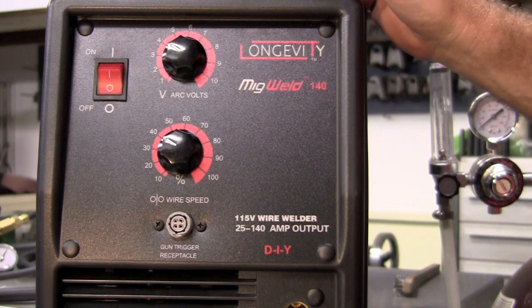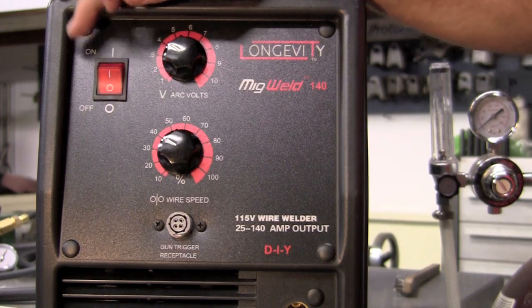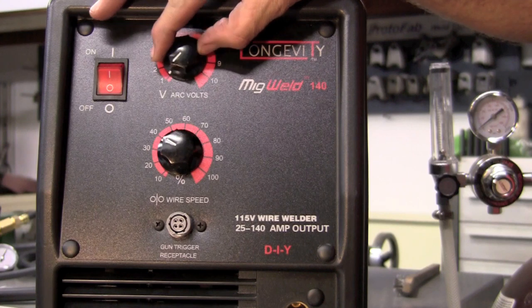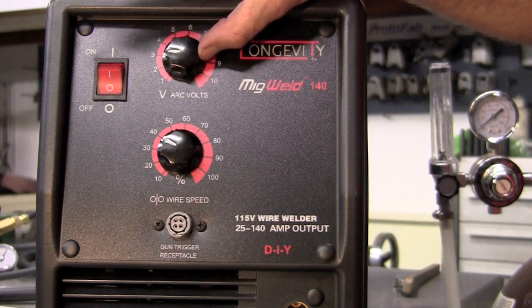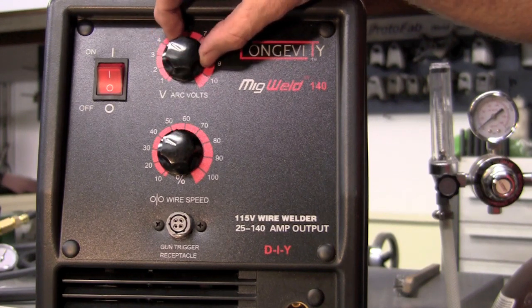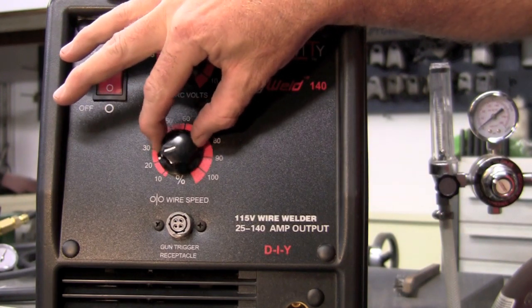One of the nice things I really like about this welder is the simplicity. On-off switch, and instead of these being detents or presets, they're rheostats. So you can really fine tune your arc volts and your wire speed.